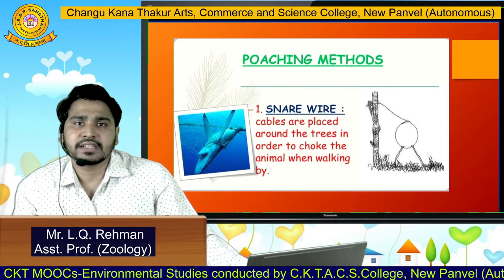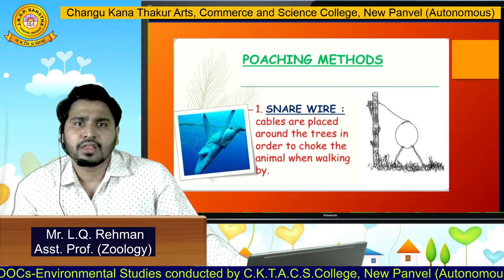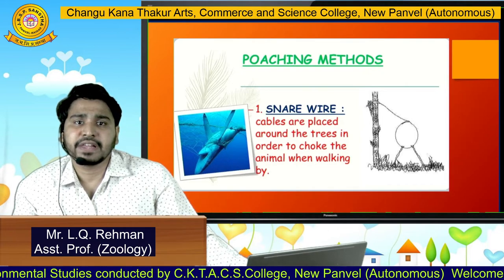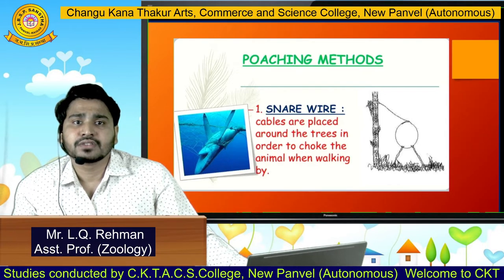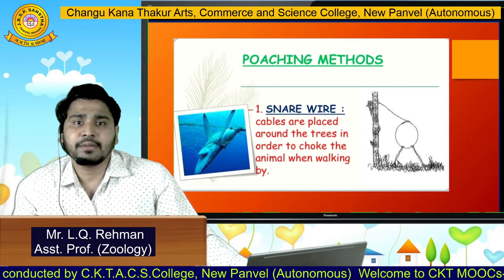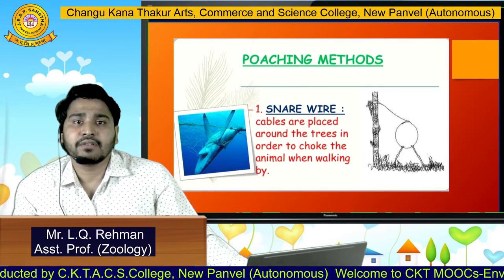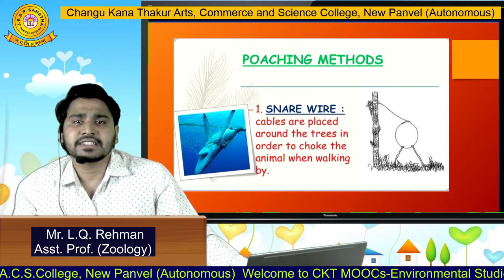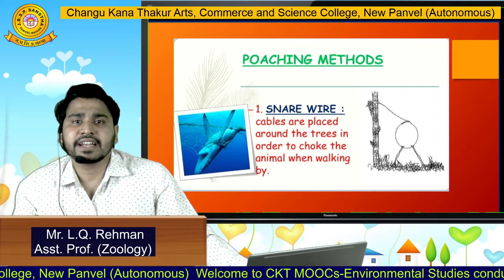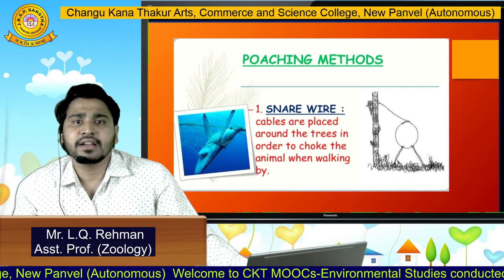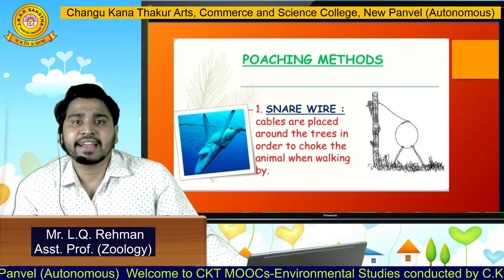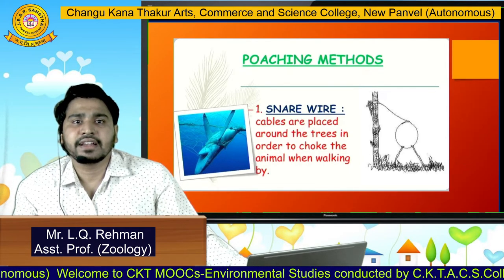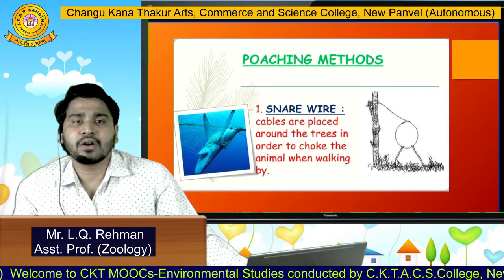The first method is snare wires. Cables are placed around trees in order to choke the animal when walking by. It is similar to a fish net — just as we place a fish net in water and fish swimming by get caught in it, similarly it is done on the ground.